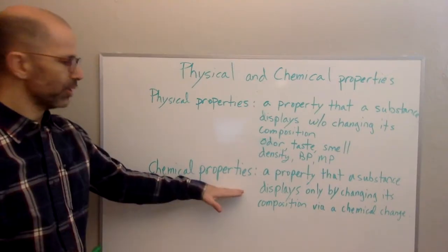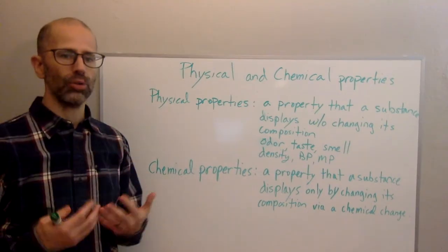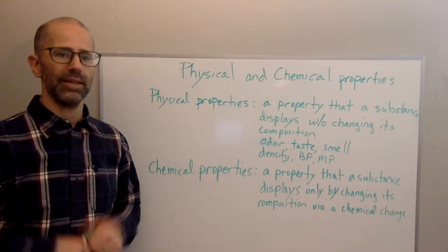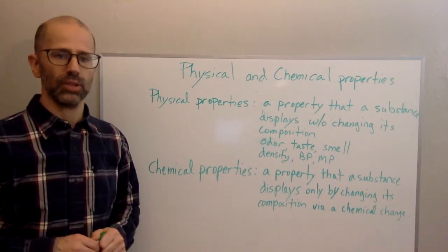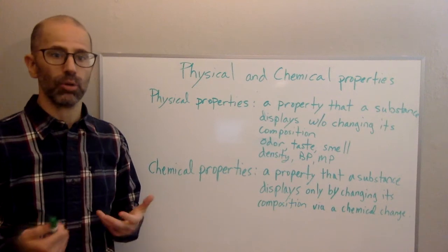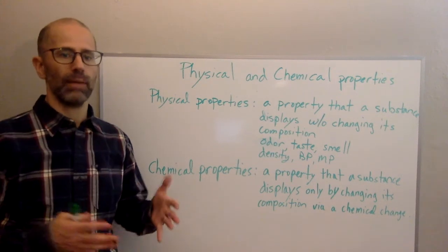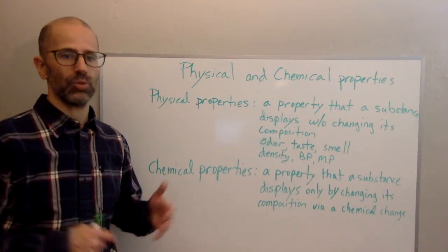Chemical properties are properties I can only observe or that are only displayed by the substance in the process of changing what the substance is. So during like a chemical reaction or a chemical change. So in the chemical change, I have to change what it is.